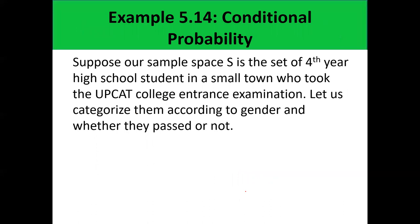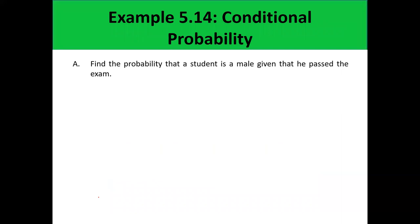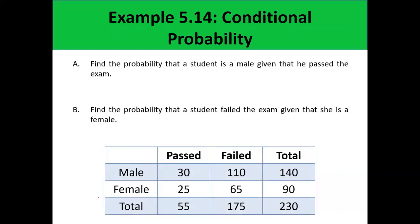Let's have an example. Suppose our sample space S is the set of fourth-year high school students in a small town who took the UP college assessment test. We categorize them according to gender and whether they passed or not, with frequencies given in a contingency table. The questions are: find the probability that a student is male given that he passed the exam, and find the probability that a student failed the exam given that she is female.